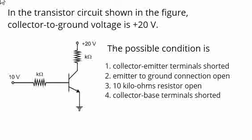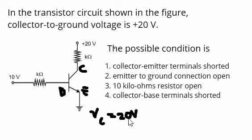Here is one electronics question which says in the transistor circuit shown in the figure, collector to ground voltage is 20 volts. This is a collector, base, emitter. What it says is Vc is equal to 20 volts, so the collector voltage is 20 volts. What could be the possible condition?